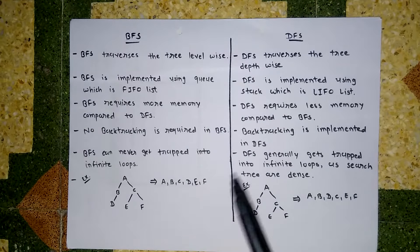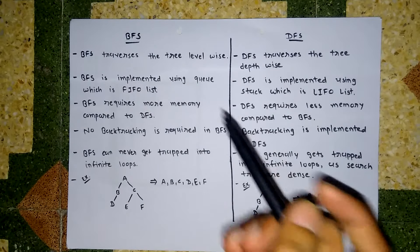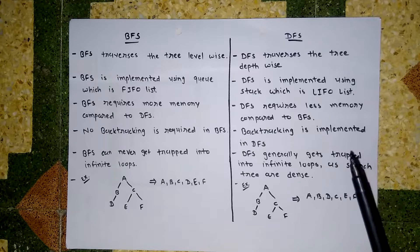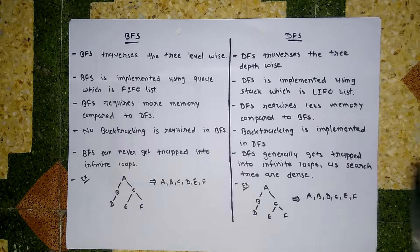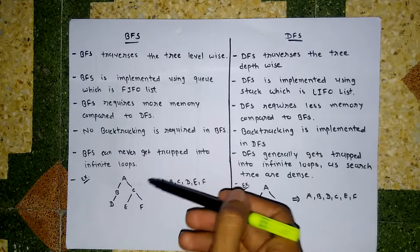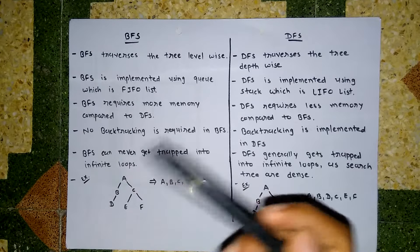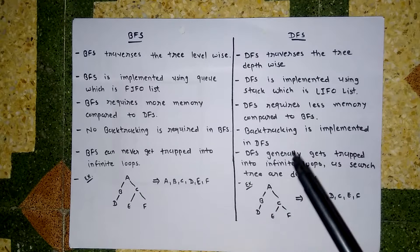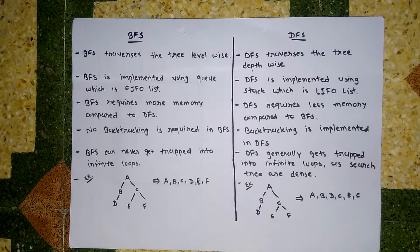When DFS is searching for a goal node and gets trapped into an infinite loop, we have to backtrack that node, which is a disadvantage of DFS. BFS never gets trapped into an infinite loop because it searches level wise, so it never gets stuck in an infinite loop.